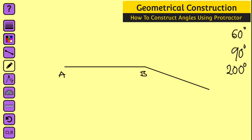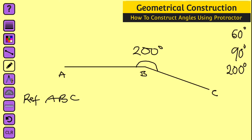Take away the protractor and use your ruler to connect the dot and point B. This angle right here is 200 degrees. Let me call this point C — therefore reflex angle ABC is equal to 200 degrees.